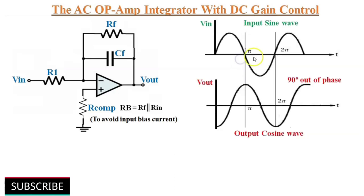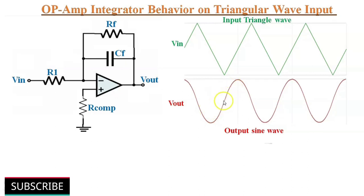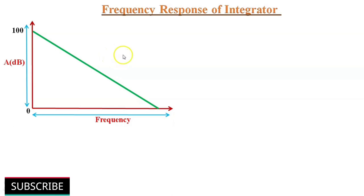If the input of an integrator is a sine wave, the output will be a cosine wave, which is 90 degrees out of phase with the input signal. In triangular wave input, the integrator produces a sinusoidal output. As the integrator acts as a low-pass filter, the high frequency harmonics are greatly reduced. The output sine wave only consists of low frequency harmonics and will be of low amplitude. Because of the feedback resistance, the frequency response of the integrator acts like a low-pass filter.